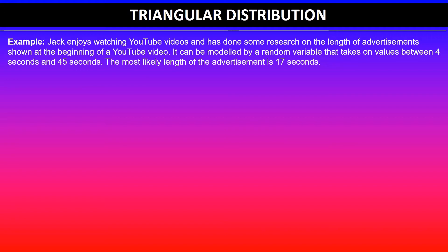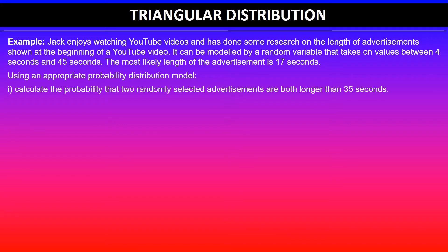The most likely length of the advertisement is 17 seconds. Then the question says using an appropriate probability distribution model, calculate the probability that two randomly selected advertisements are both longer than 35 seconds.